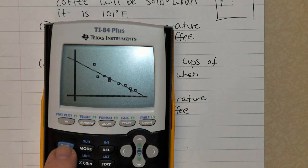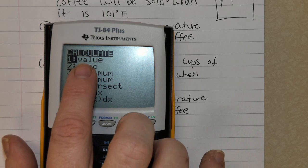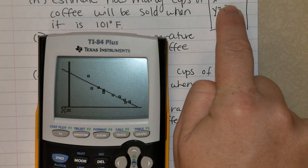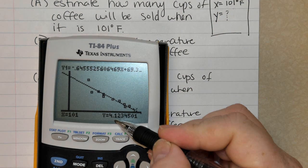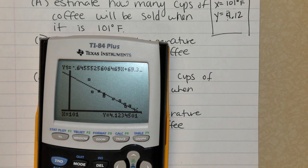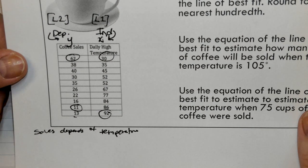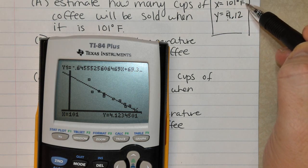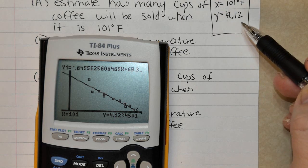How do we calculate it? You're going to hit the button over here that's blue. It says second. Go up to the top and find trace. The first one that's highlighted will be value. Press enter. The x value is what? X is 101. And the y value is what we're looking for. Now what does y represent? Y represents the number of cups of coffee sold. So when it's 101 degrees Fahrenheit, we can estimate that approximately 4 cups of coffee will be sold.